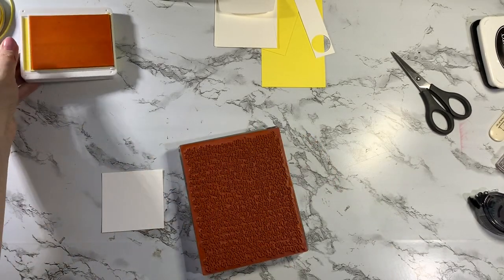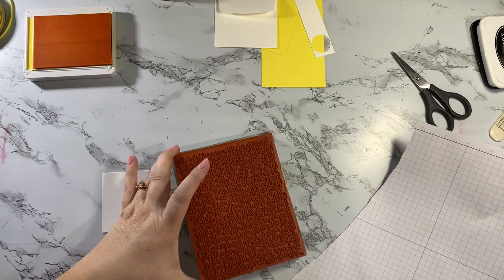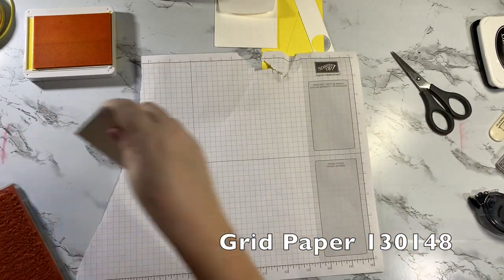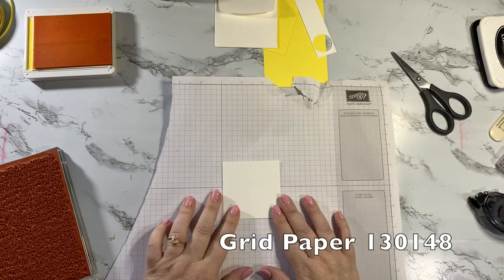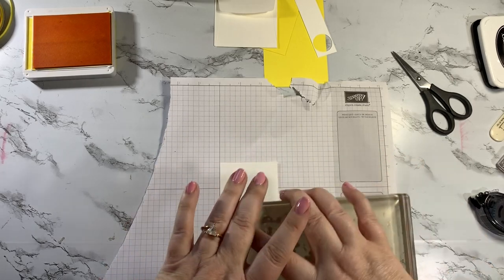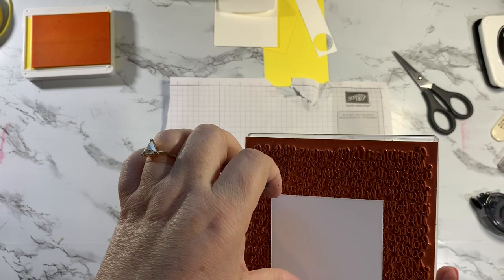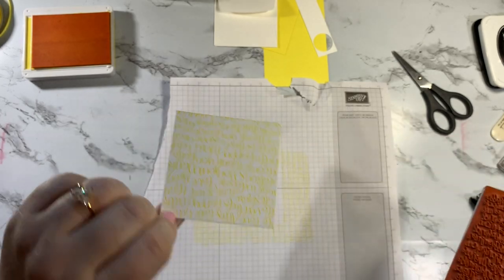Okay, set that aside and I need a piece of scrap paper to stick behind. I'm gonna set this down because I don't want to get ink all over my table. So I'm gonna just set this down and grab this big block here and I'm gonna go ahead and stamp. Press and lift, and there we go.